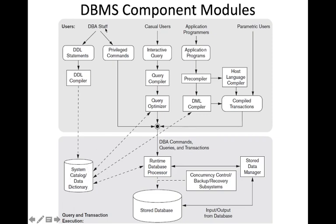The DBA staff also executes some privileged commands — for example, to authorize some person. All these privileged commands are supplied by the DBA staff and will be given to the runtime data processor, which we will see about later. That is the execution flow of the DBA staff commands.